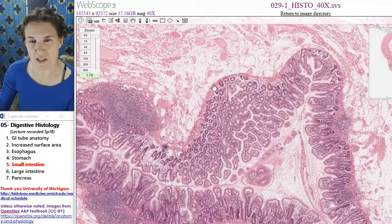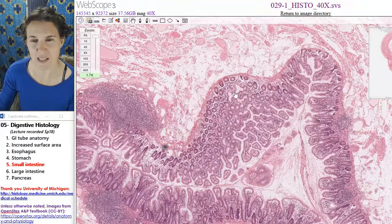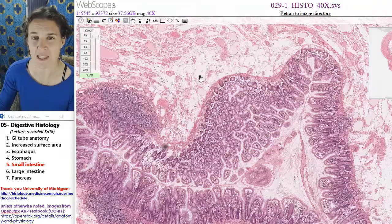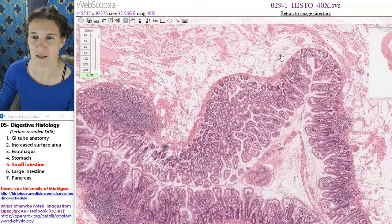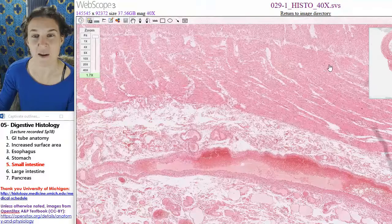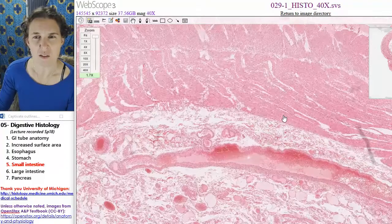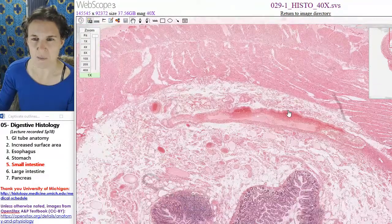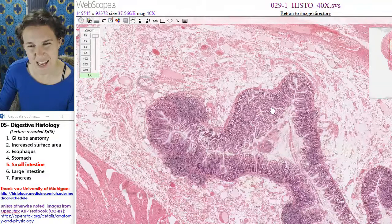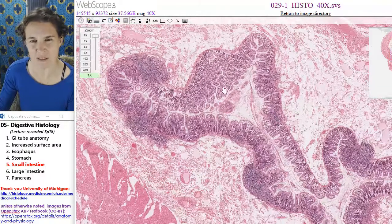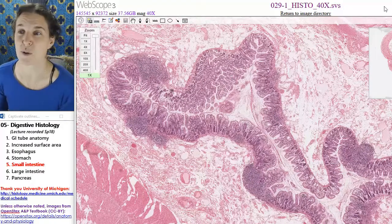Here we have muscularis mucosae, which means that all of this is lamina propria, but this is submucosa deep to, or basal to that. And then we've got our big, thick layers of smooth muscle there in muscularis externa. But this is jejunum, and that is something that might help you decide that.